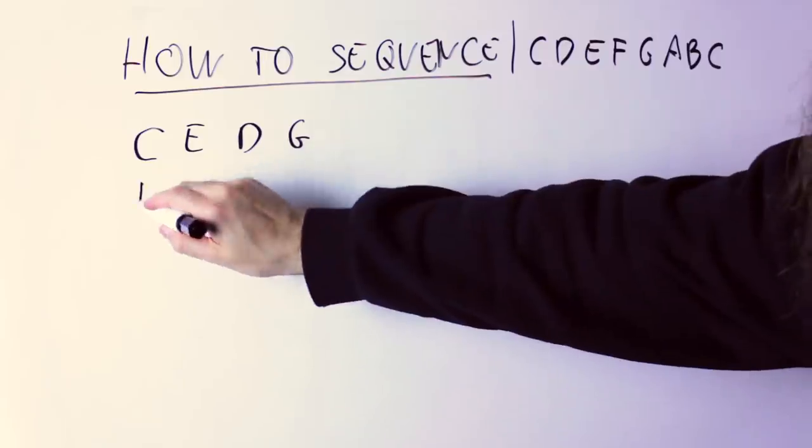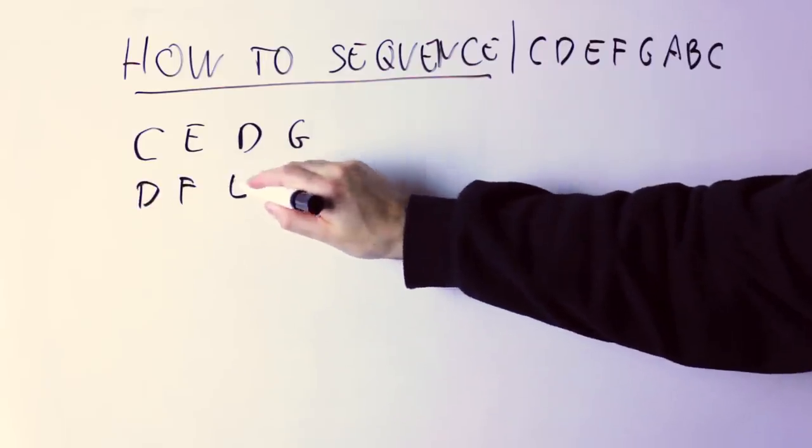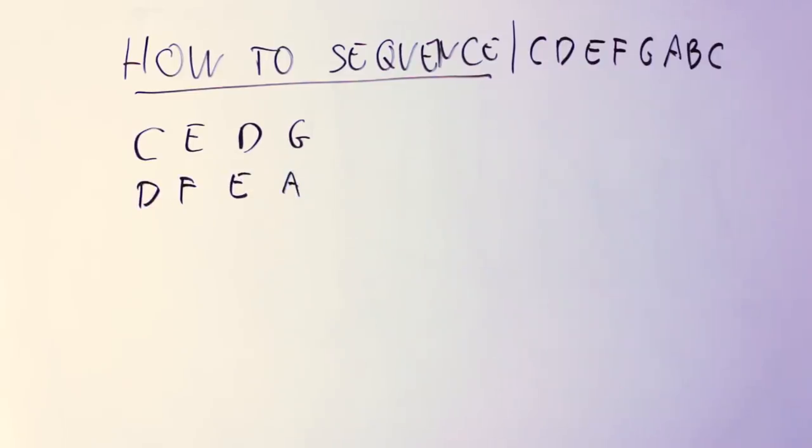Now to sequence this melody we start moving every single note of this melody one degree higher in the scale. So C becomes D, E becomes F, D becomes E, G becomes A and now I play this new melody.